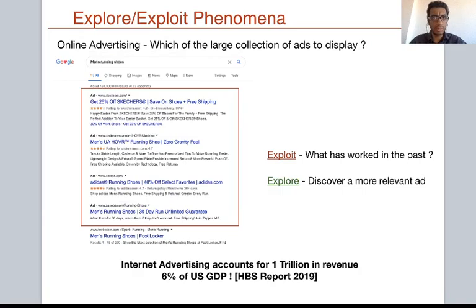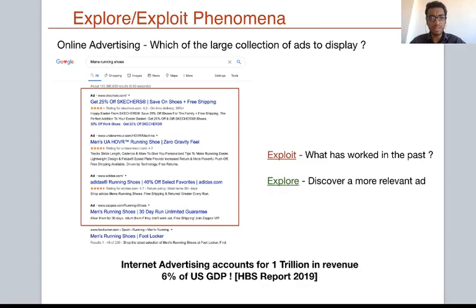Another example of the explore-exploit phenomenon, and one which is important to our paper, is that of online advertising on internet search engines. Every time a user types in a query, the search engine decides to show a few ads from a huge catalog that it believes is most relevant. The search engine does not have full information on what the relevant ads are and must learn them over time. It could either exploit and show ads that worked well in the past or explore ads shown fewer times in the hope of discovering a more relevant advertisement. This is a very important problem as online advertising occupies at least 6% of US GDP.